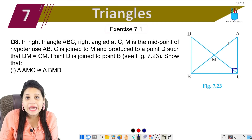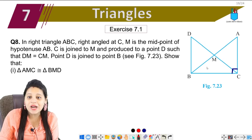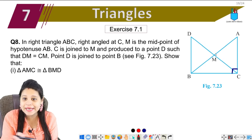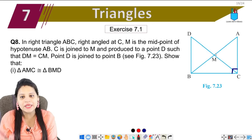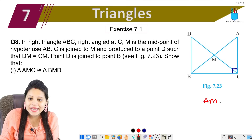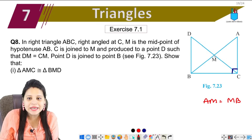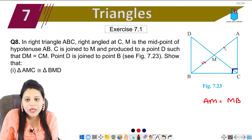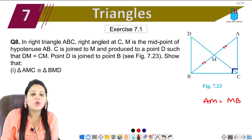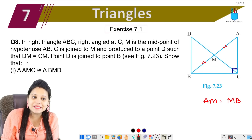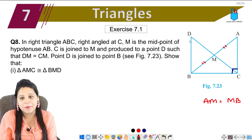M is the midpoint of AB. When M is the midpoint, it means AM is equal to MB — it has divided the line into two equal parts. And CM is produced to a point D such that DM is equal to CM.